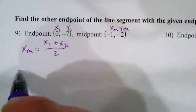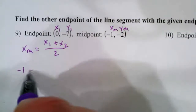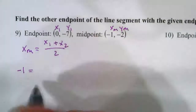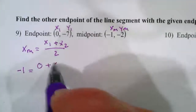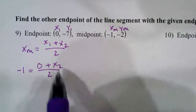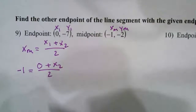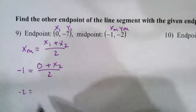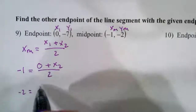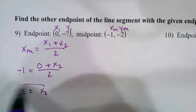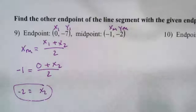So we have negative 1 equals 0 plus x₂ over 2. We have to solve for x₂, so multiply both sides by 2 — we get negative 2 — then we get 0 plus x₂, so x₂ equals negative 2. So there's the x-coordinate.